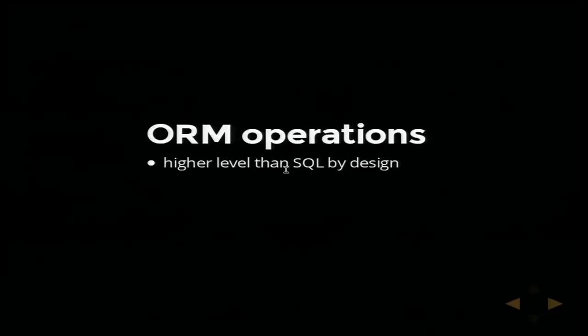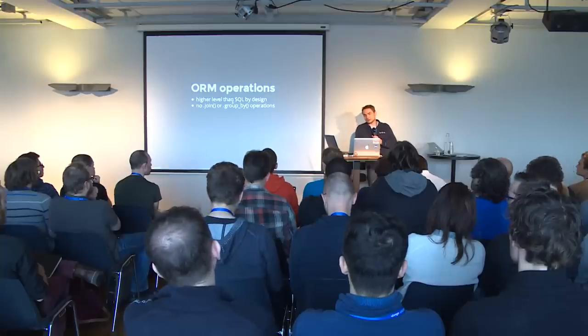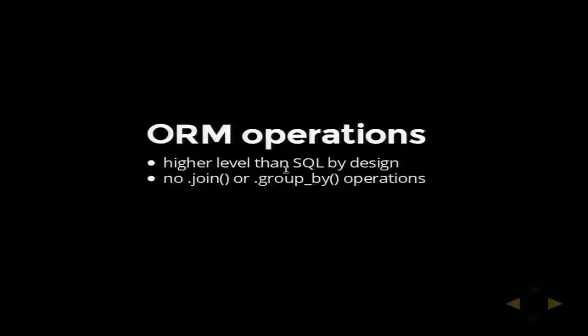The ORM works on operations. The operations are higher than SQL by design, so we don't have join or group by operations — and that's also a big distinction to many ORMs. You really can't do a join in Django ORM, and the reason is that Django ORM manages all the joins for you. We are going to look at how it does that today. And if you are going to ask for a feature that is by design SQL-specific, it's not likely going to happen.